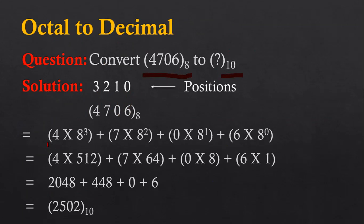Now I have to multiply each digit with its positional value along with the base. The digit 4 is at position 3, so it is multiplied by 8 raised to 3. Here 8 is the base and 3 is the position, so 8 raised to 3 is multiplied by 4.